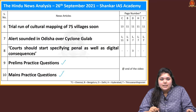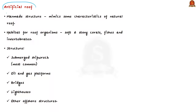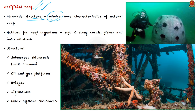Let us move on to the first session: important terminologies that appeared in last week's newspaper. The first terminology is artificial reef. We often discuss natural reefs — coral reefs — and their importance, but we also have something called an artificial reef. It is a man-made structure that may mimic some characteristics of a natural reef. Natural reefs are habitats for reef organisms such as soft and stony corals, fishes, and invertebrates. Similarly, artificial reefs also enhance the habitat for reef organisms.